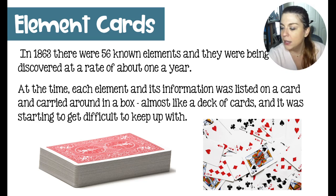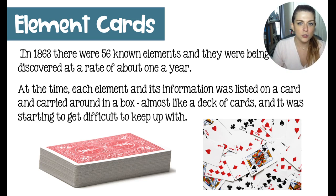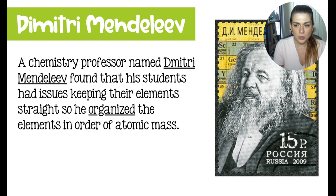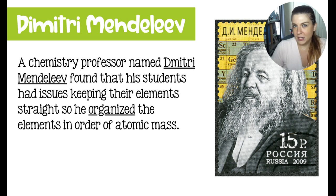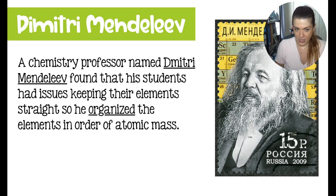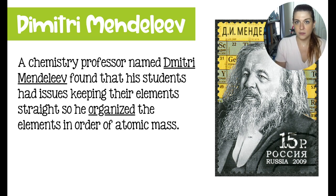But it was getting to be too much, and Mendeleev was thinking there had to be something better for his students. He was from Russia, and he figured out a way to organize all of the elements in a way that made sense. He took all of the elements at the time and put them in order of mass, from lightest to heaviest.